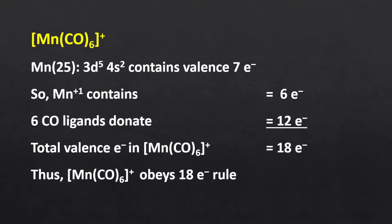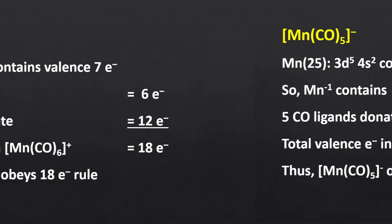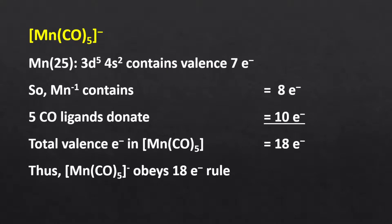Hexacarbonyl manganese ion: the atomic number of manganese is 25, so the electronic configuration of its valence shell is 3d5, 4s2. For the oxidation state of +1, there are 6 electrons from manganese and 12 electrons from 6 carbonyls, giving overall 18 electrons. For the oxidation state of -1, there are 8 electrons from manganese and 10 electrons from 5 carbonyls, giving overall 18 electrons. Both complexes follow the 18 electron rule and are stable.